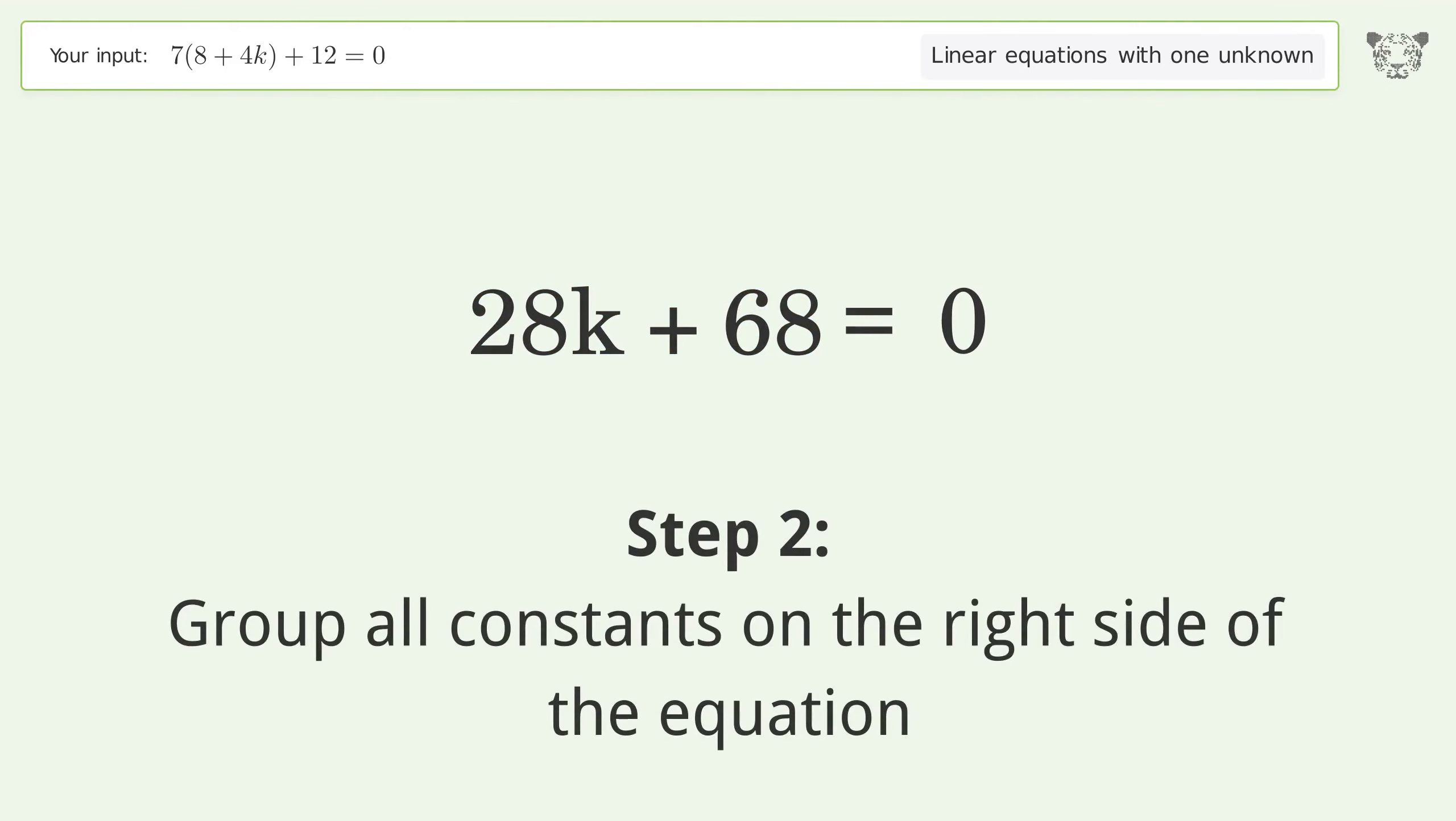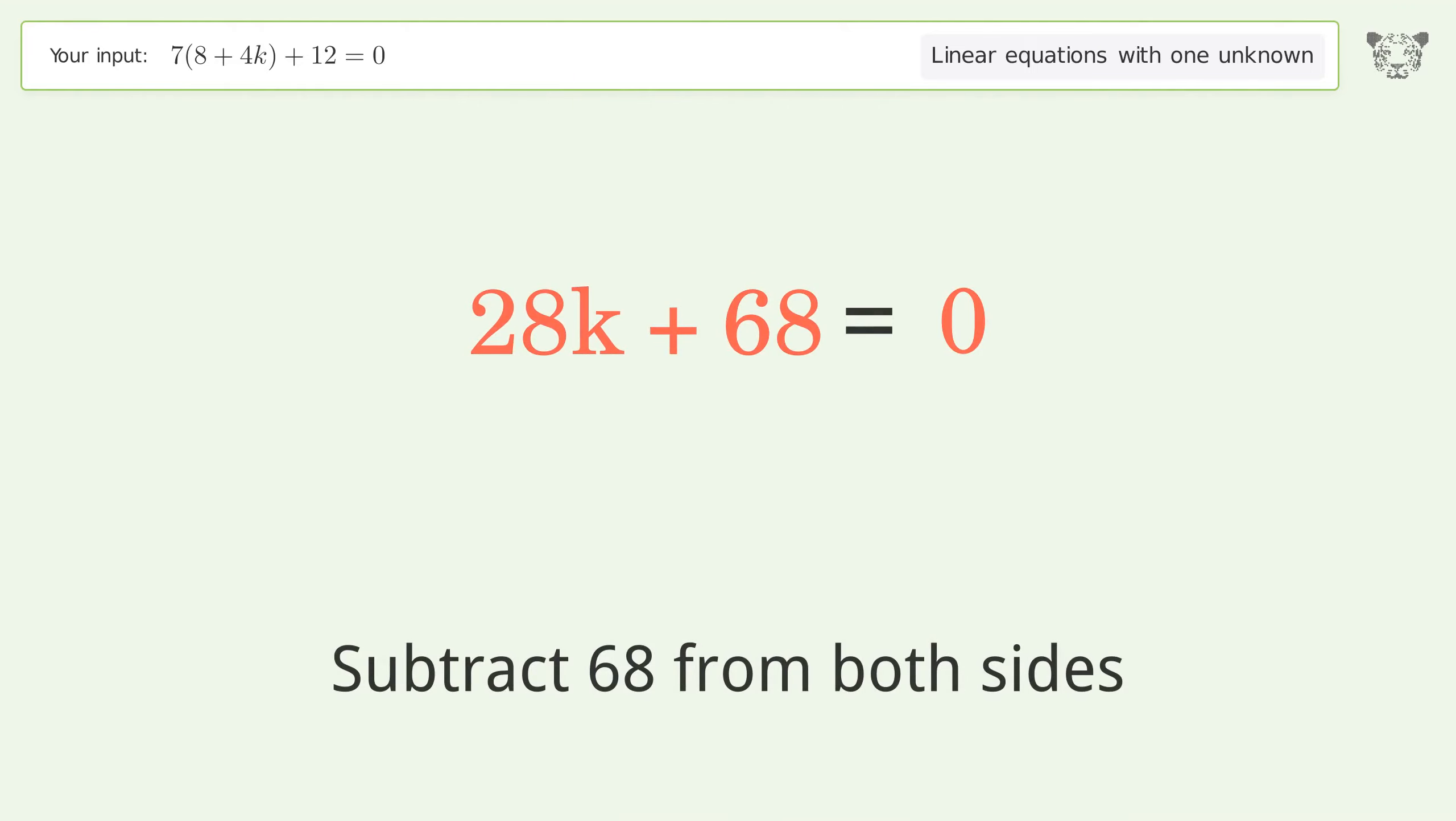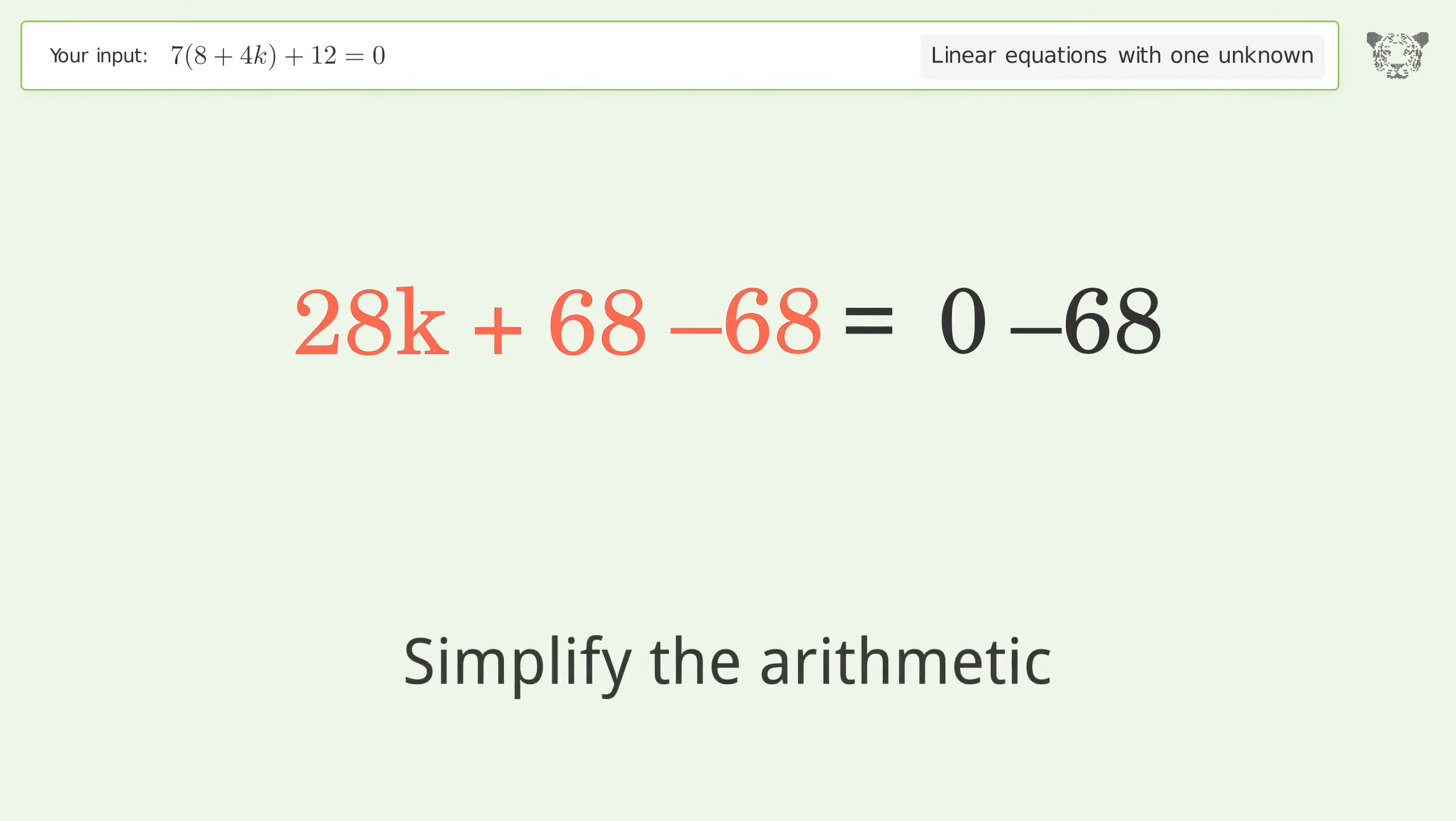Group all constants on the right side of the equation. Subtract 68 from both sides. Simplify the arithmetic.